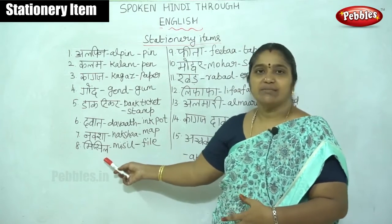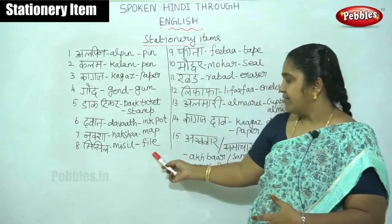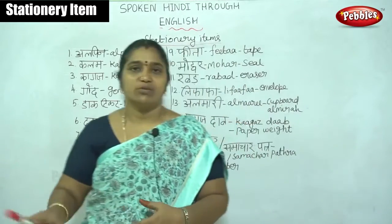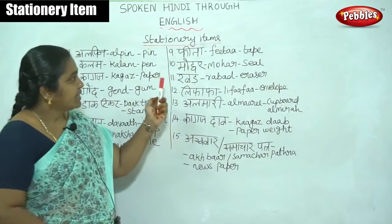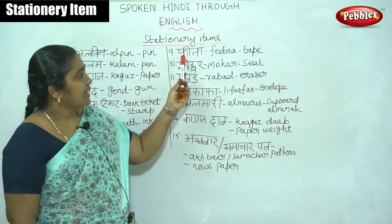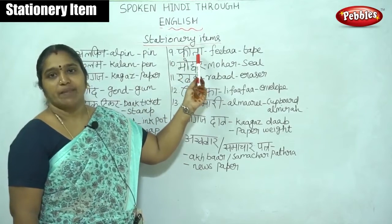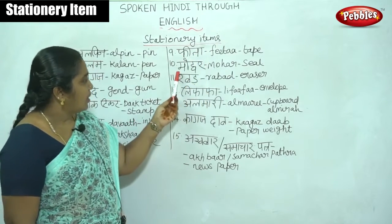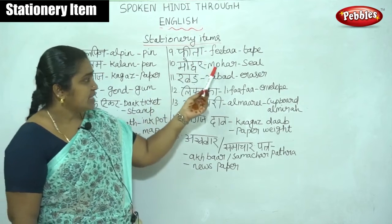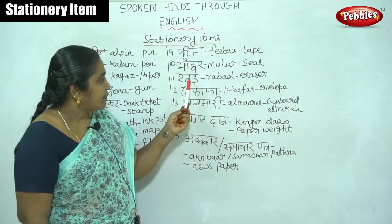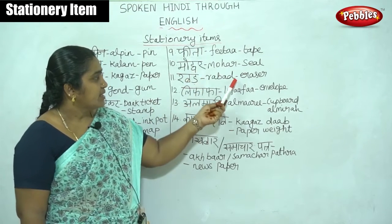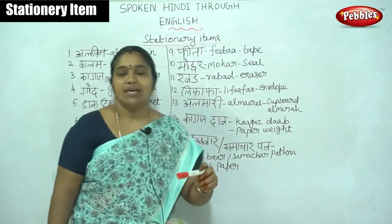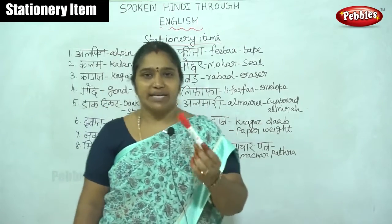Then missile — missile is called file. We can use the file for anything to save. Then fita — fita is tape. Then moher — moher is seal. Then rabbet — rabbet is eraser.